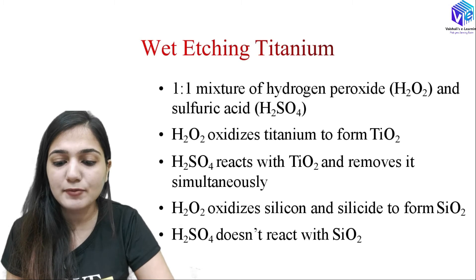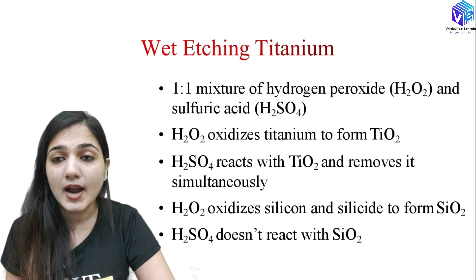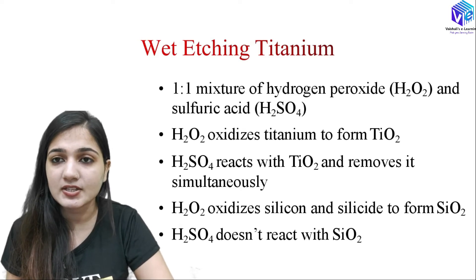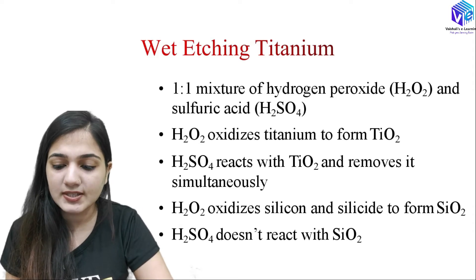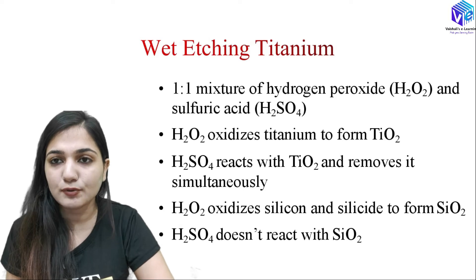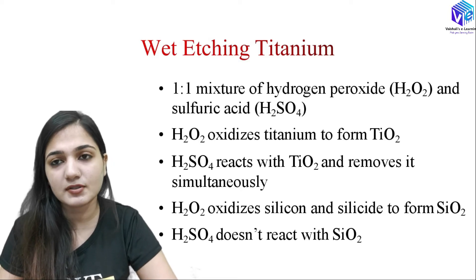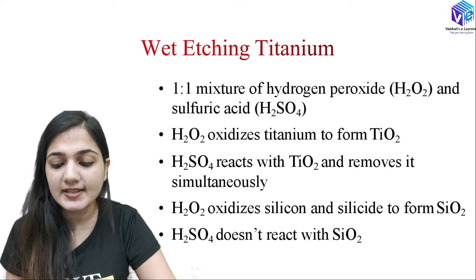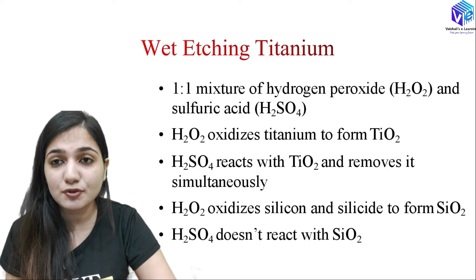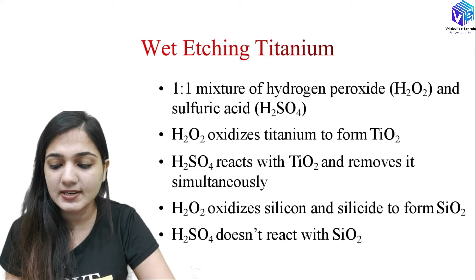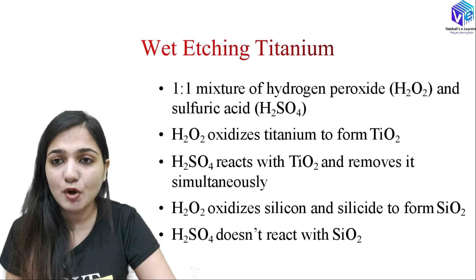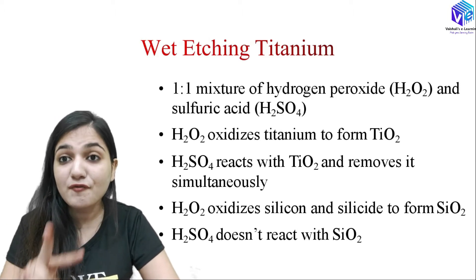Now coming to the wet etching of titanium. Here I am using a one-to-one mixture of hydrogen peroxide — H₂O₂, which is a very good oxidizing agent — and sulfuric acid. H₂O₂ oxidizes titanium to form TiO₂; then sulfuric acid reacts with the titanium oxide and removes it. Simultaneously, hydrogen peroxide also oxidizes silicon to form silicon dioxide because it is a very strong oxidizing agent, but H₂SO₄ does not react with silicon dioxide.